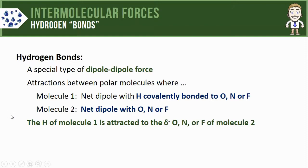And lastly, to be a hydrogen bond, the hydrogen in molecule one must be attracted to the partially negative oxygen, nitrogen, or fluorine of molecule two. Now that's kind of a mouthful and a lot to pay attention to, but it's simpler than you might think. Let's take a look at a few examples to clarify what this means.